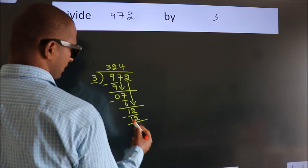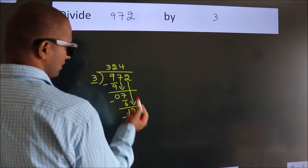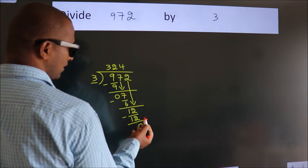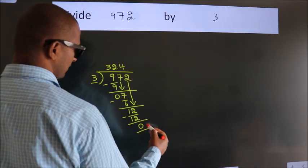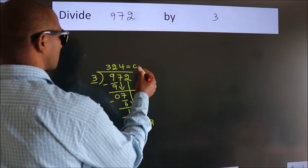Now we subtract. We get 0. After this, no more numbers to bring down, so we stop here. This is our remainder. This is our quotient.